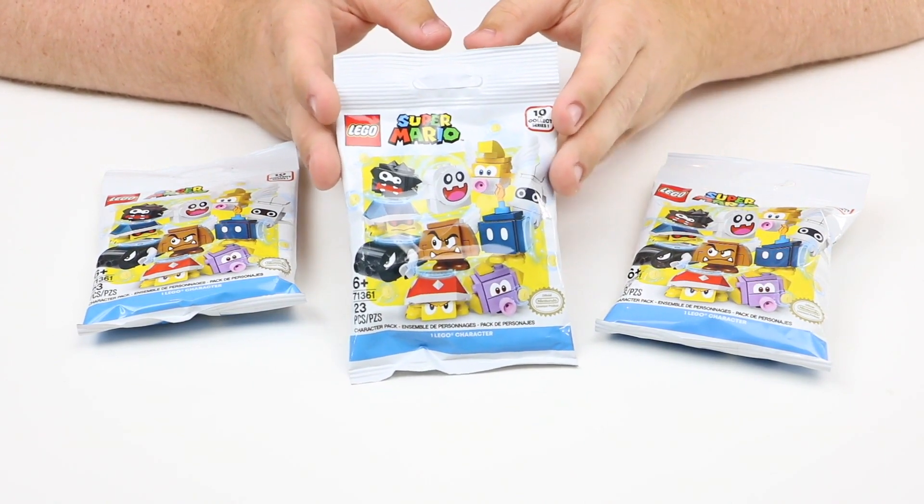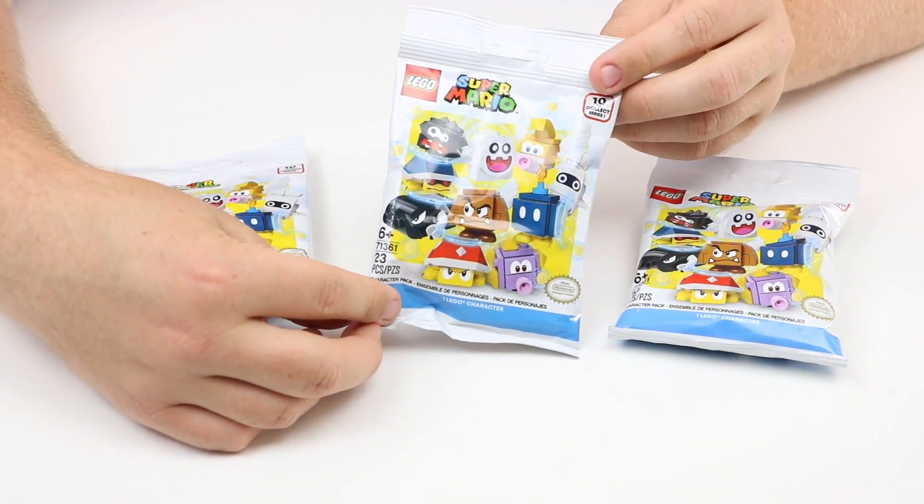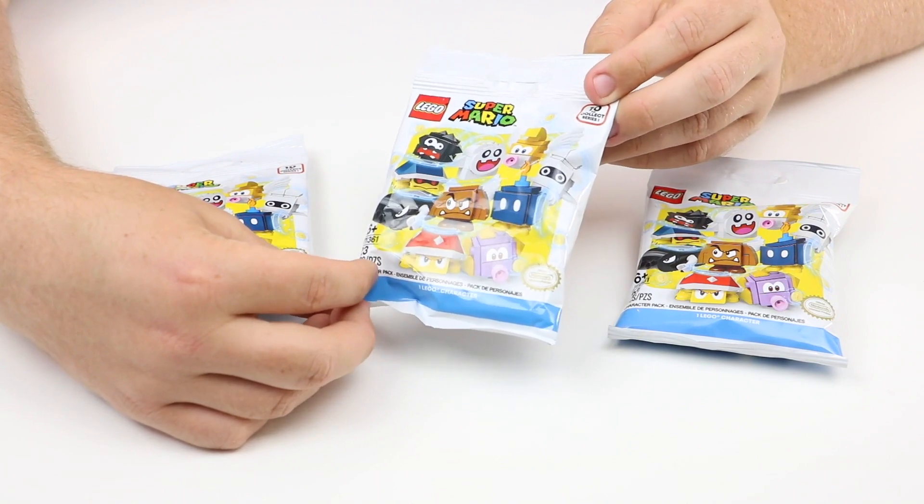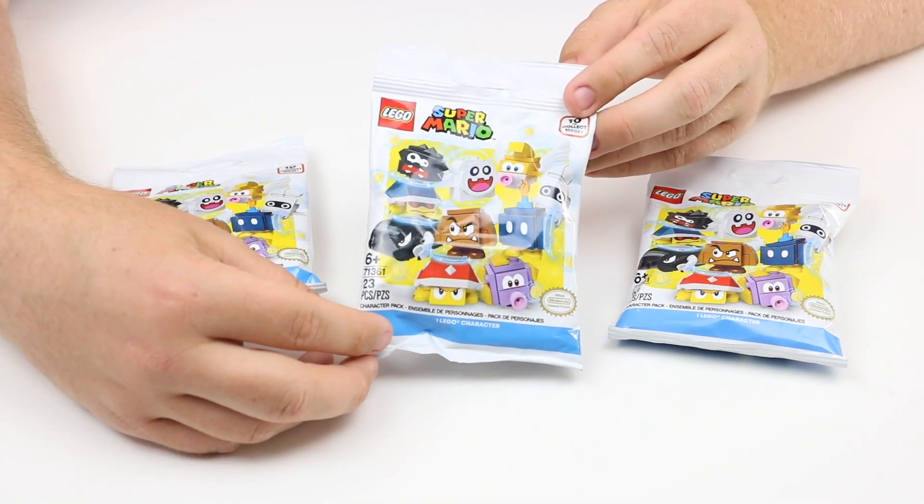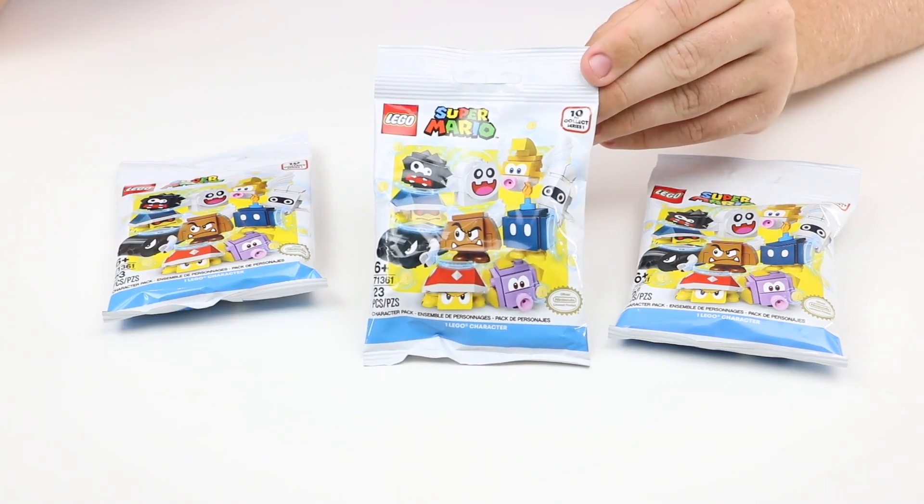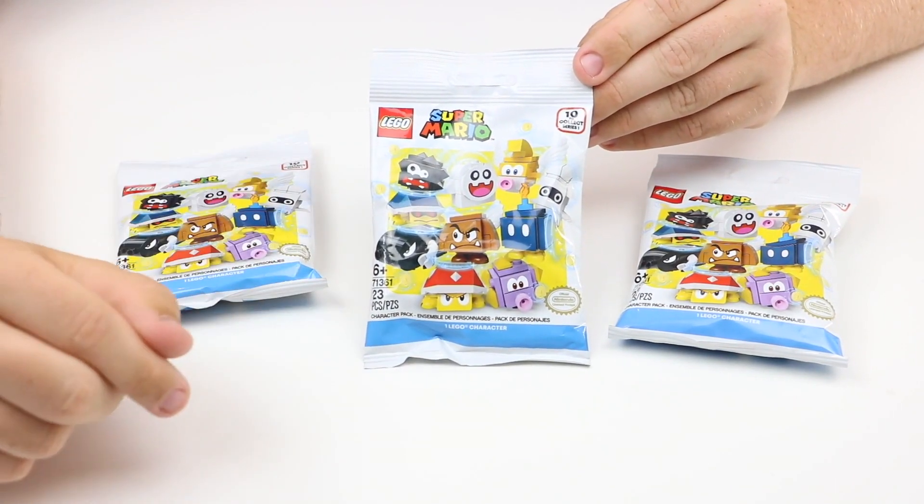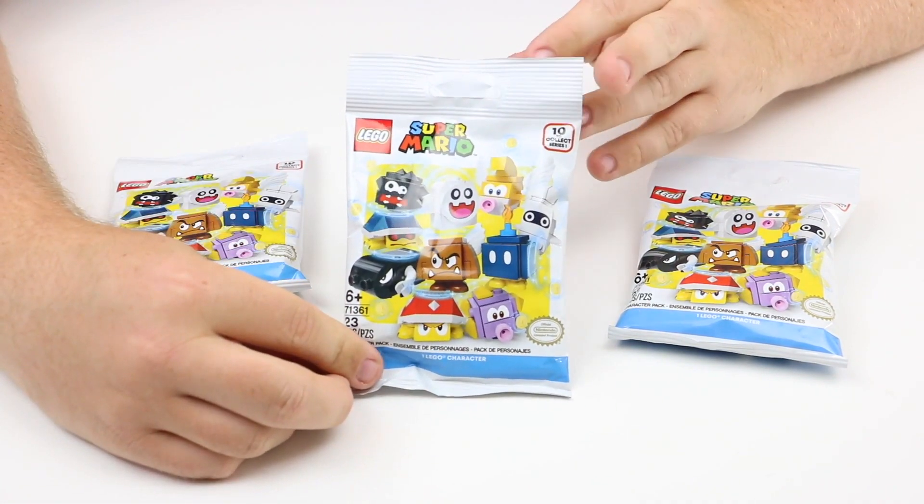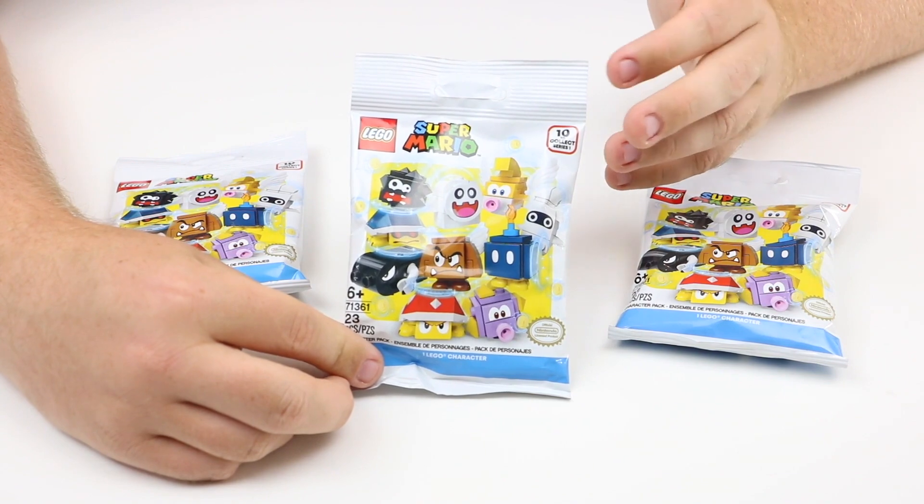So as you can see here, I have three of them. That's actually the limit you can buy on LEGO Shop at Home. Each character pack has a total of 23 LEGO pieces and includes one character. There are ten different characters to collect, and all ten are on the very front of the packaging here. They're the same size as a collectible LEGO minifigure packaging, and I assume they come in a very similar box.